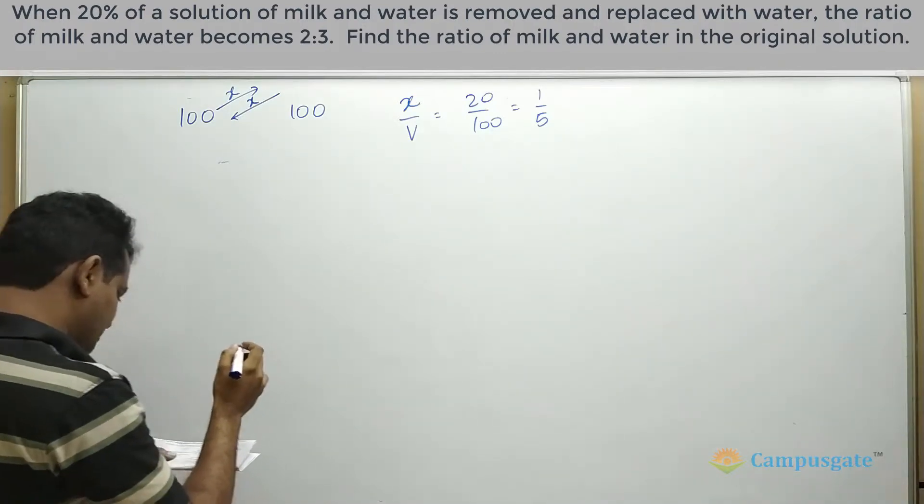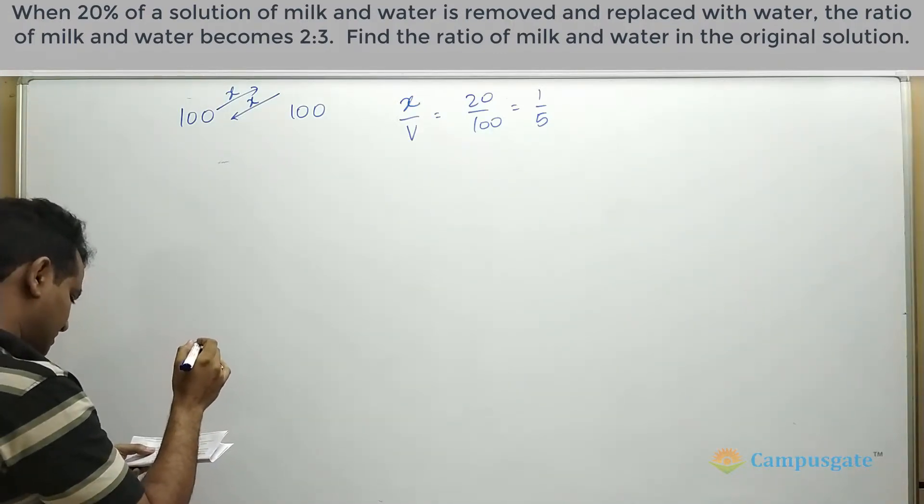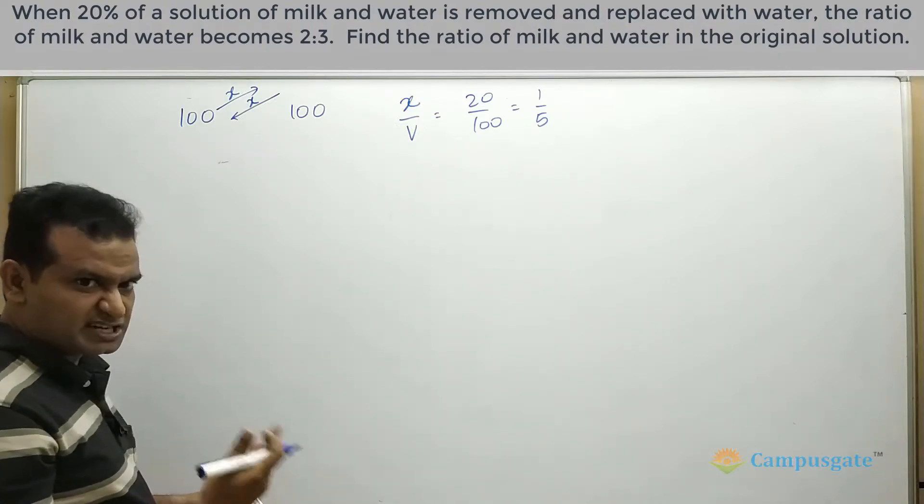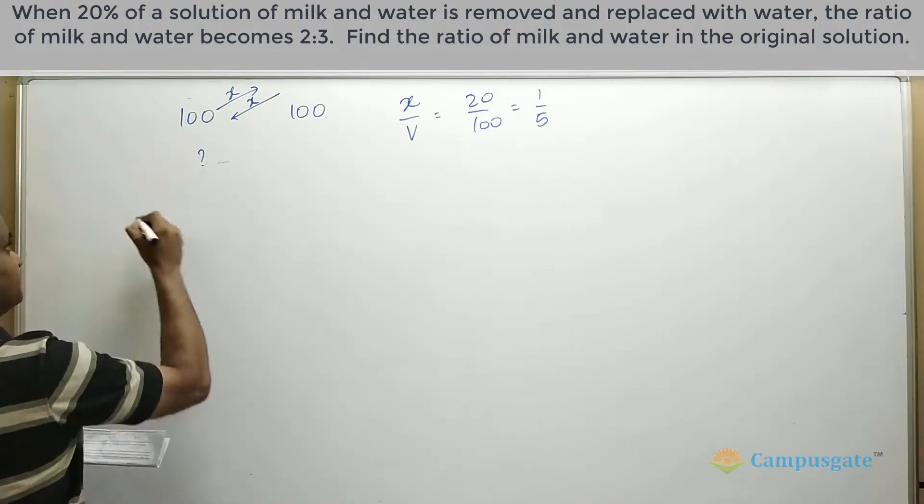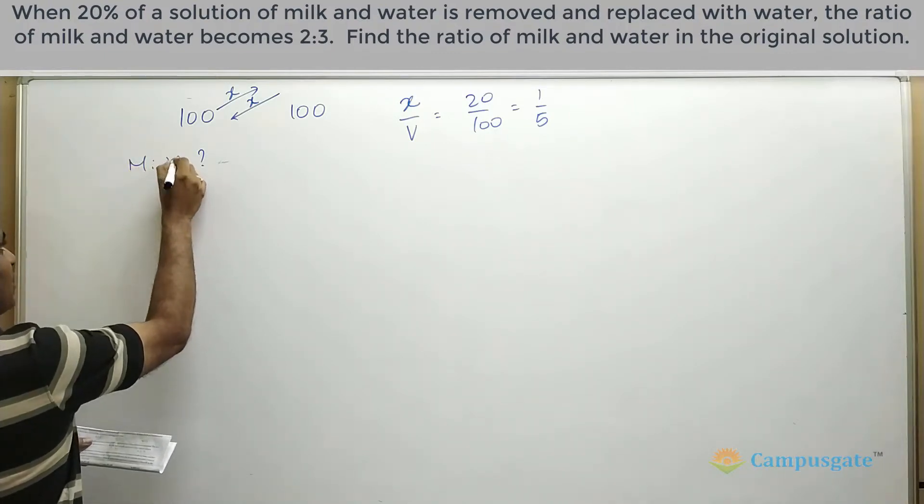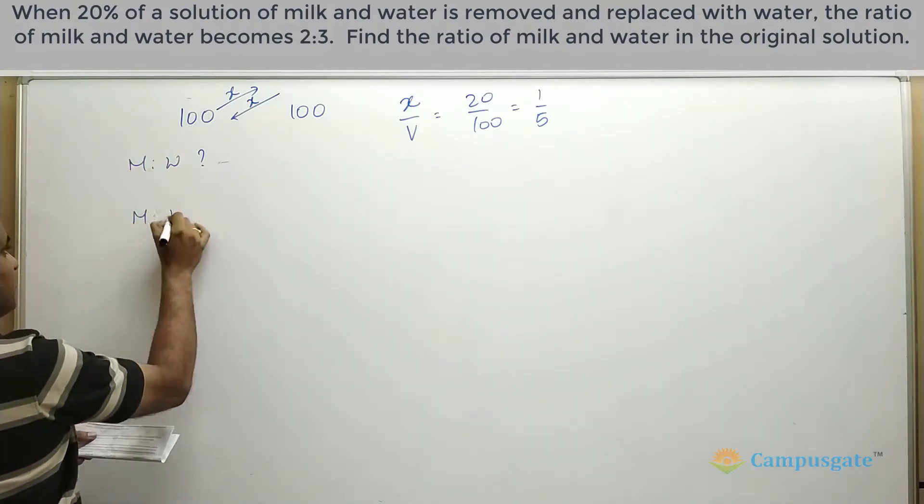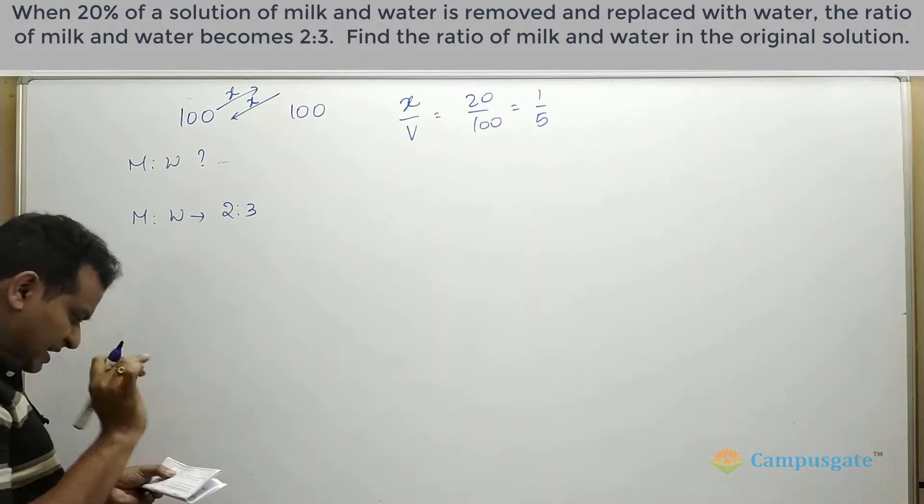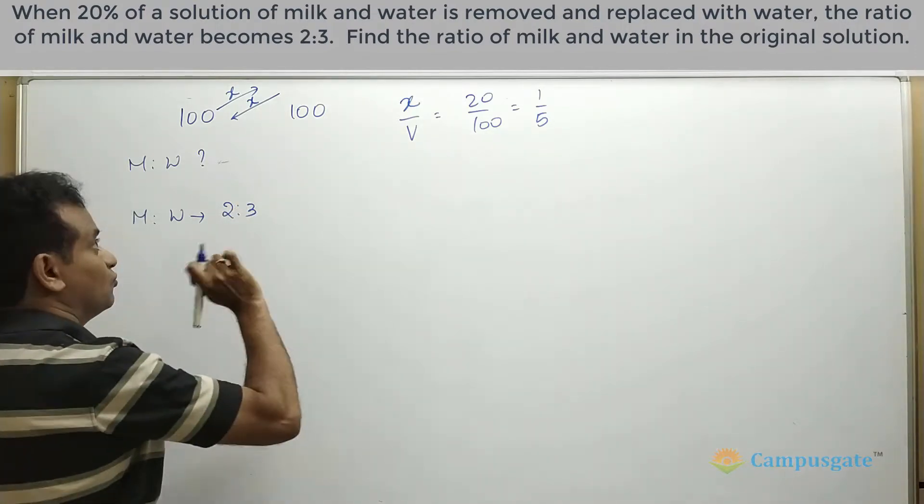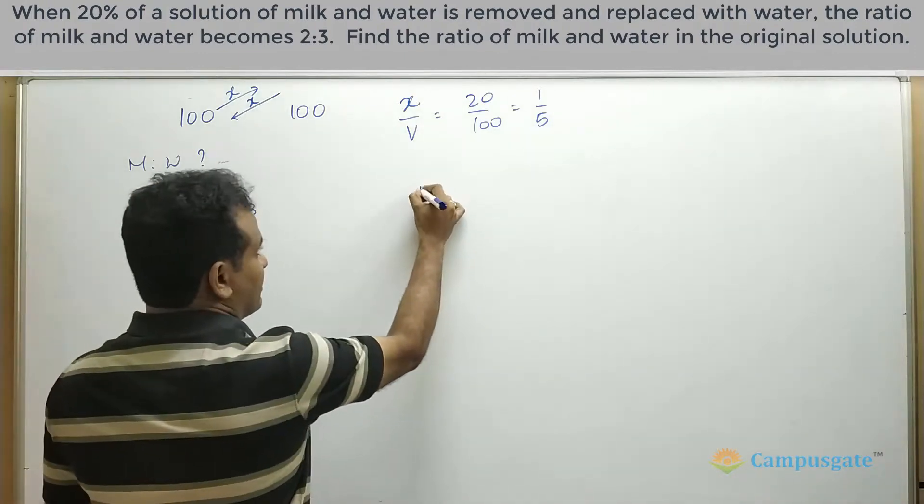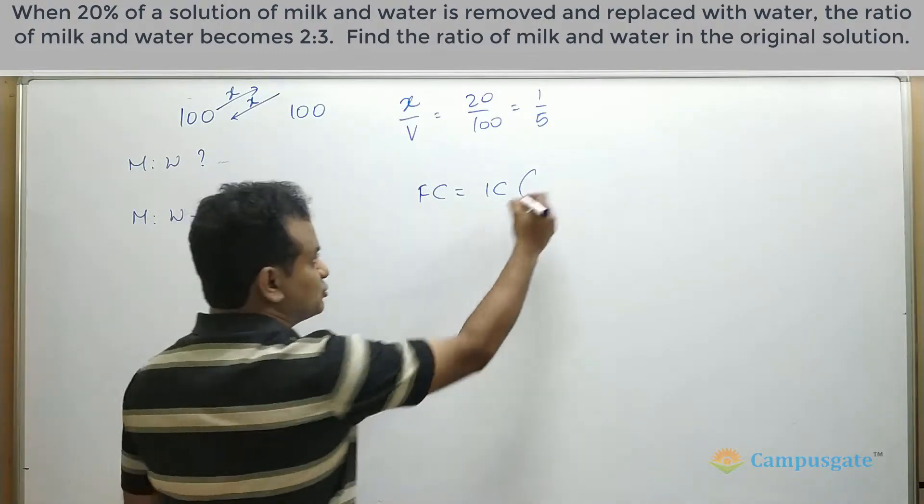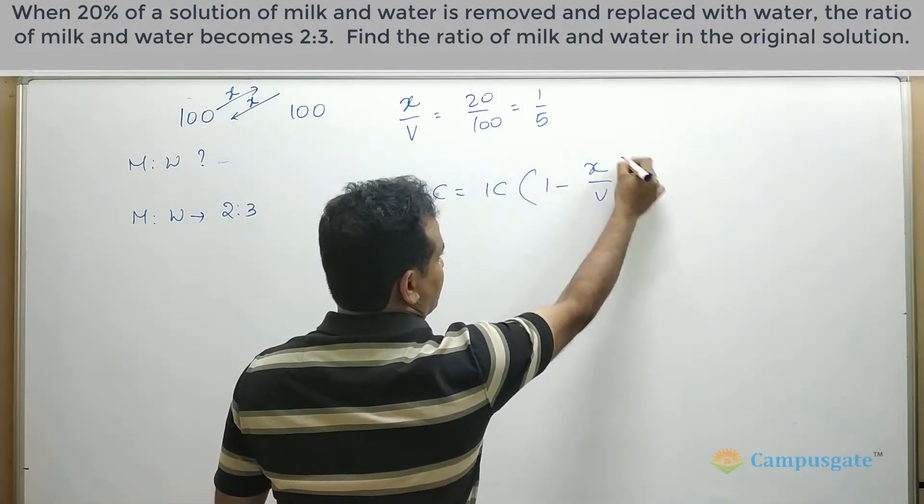Now, it is given that the concentration initially is we have to find that milk and water concentration in the original solution that we need to find out. So milk and water and final milk and water is given as 2 is to 3 and we are replacing it with pure water. So therefore, again we will put this formula FC is equal to IC into 1 minus x by v.